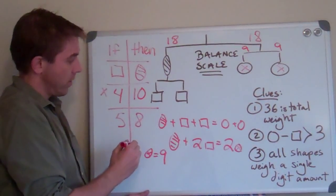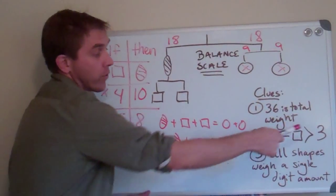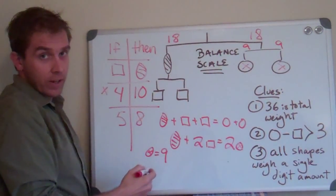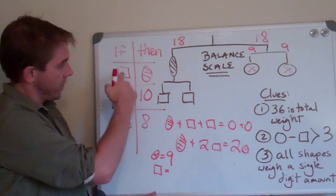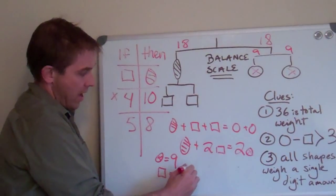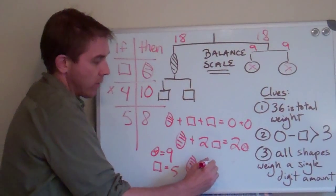Does this work? Well, circle nine minus five is four. It's greater than three. Everything is a single digit, and this totally works. So, the square is going to be equal to five, and the oval, or the stripes, is going to be equal to eight.